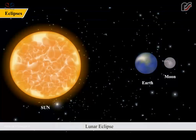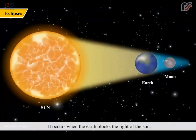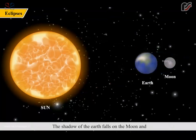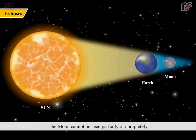Lunar eclipse occurs when the earth blocks the light of the sun. The shadow of the earth falls on the moon, and the moon cannot be seen partially or completely.